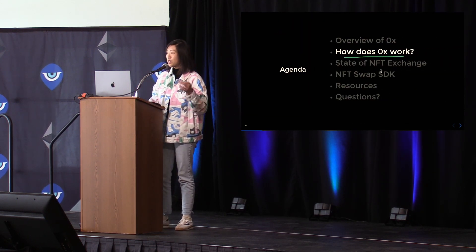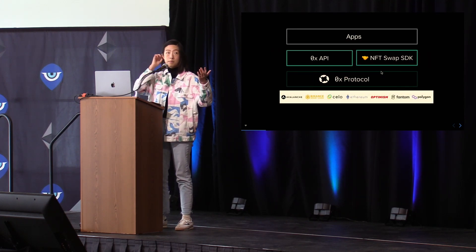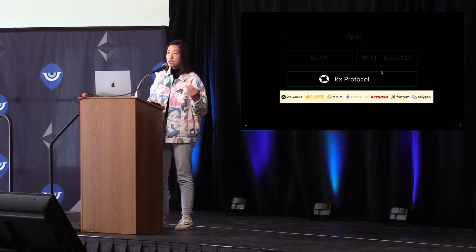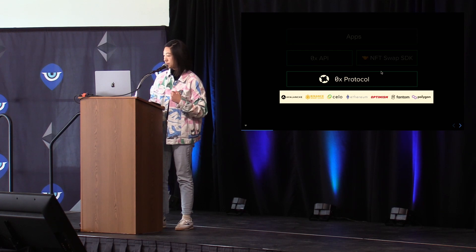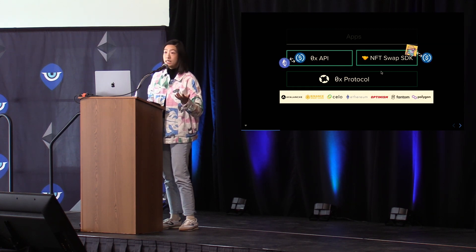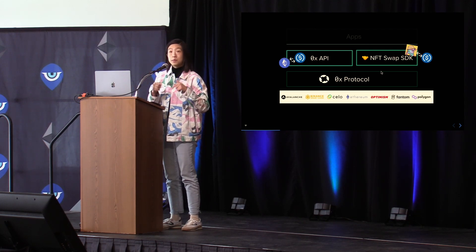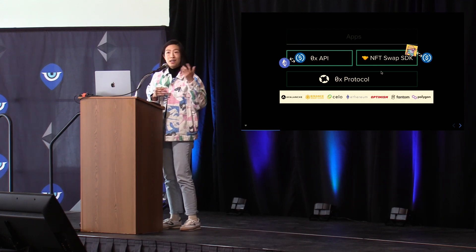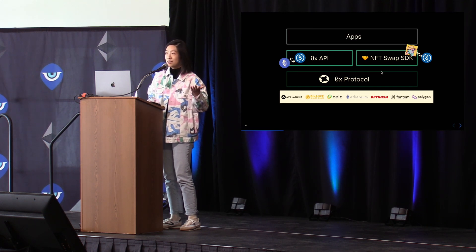Let's look at how ZeroX works. This is a simplified version of our tech stack. At the very bottom are the blockchains, then on top of that is our ZeroX protocol — a set of audited smart contracts that enable swapping between market makers and takers. On top of that are our developer tools: the ZeroX API and the NFT Swap SDK. The API is specifically for ERC-20 interactions, aggregating liquidity across pools to surface the best price — think of it as the Google Flights of DeFi swapping. The NFT Swap SDK helps you easily plug swap capability into your application.